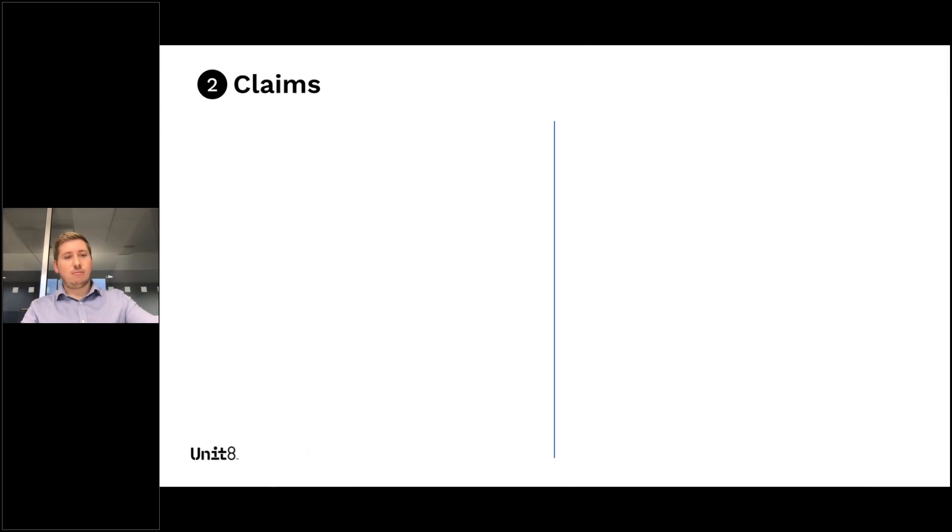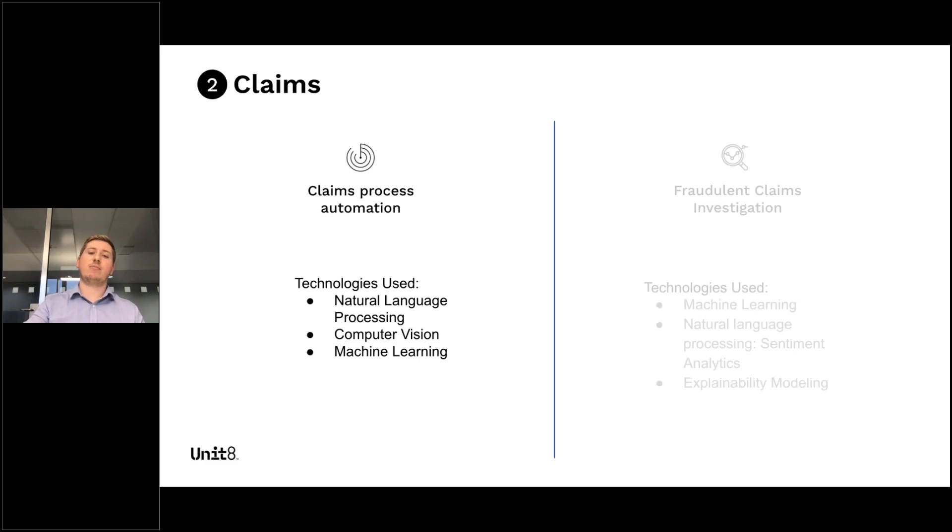Claims. It's one of the most important interaction points for a customer in regards to evaluating their insurer. The experience that they have during this claims process is key. So automating that claims process to make that as customer friendly as possible with tools like natural language processing, computer vision, machine learning. And then fraudulent claims investigation - depending on what insurance area you're in, 5% to 10% of claims are fraudulent. How do we better help investigators focus their investigations?